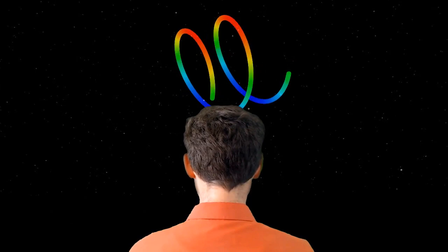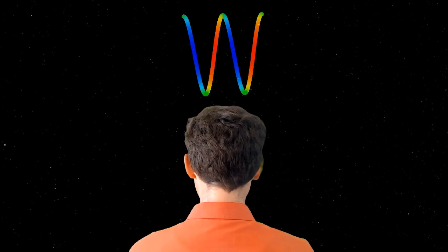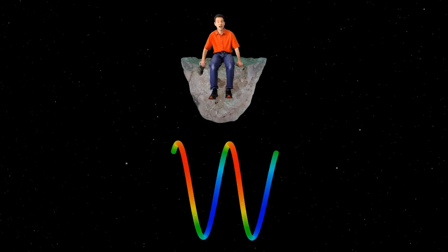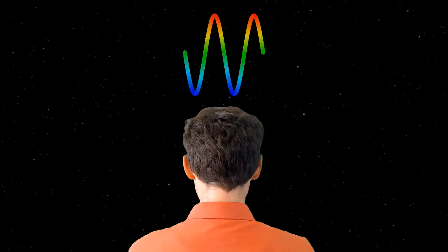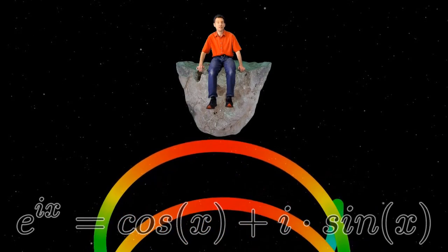But if I shift my view so I can see only the angle plotted against the real axis, the spiral becomes a cosine wave. Shifting my view again so I can see only the angle plotted against the imaginary axis, the spiral becomes a sine wave. So the complex exponential contains within it both a cosine wave and a sine wave. And that is what Euler's formula is saying. The i tells us that in order to see the whole picture, we have to shift our viewpoint so that we can see both the real and imaginary axes.